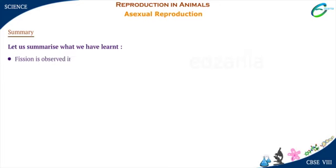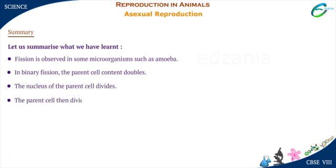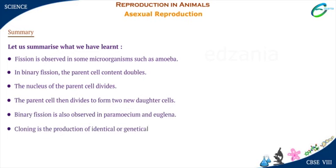Fission is observed in some microorganisms such as amoeba. In binary fission, the parent cell content doubles, the nucleus of the parent cell divides, and the parent cell then divides to form two new daughter cells. Binary fission is also observed in paramecium and euglena. Cloning is the production of an identical or genetically similar copy of a cell, an organ, or a complete organism.